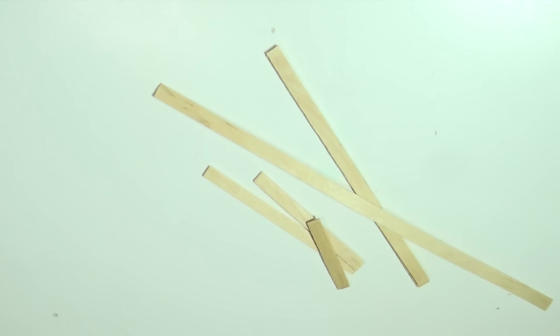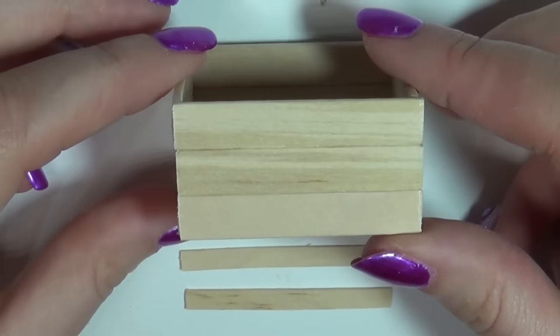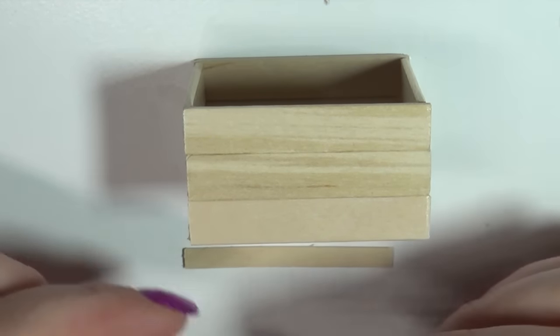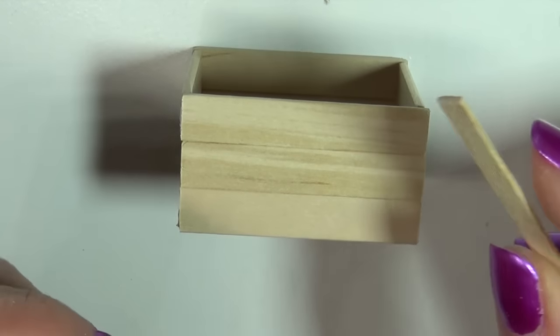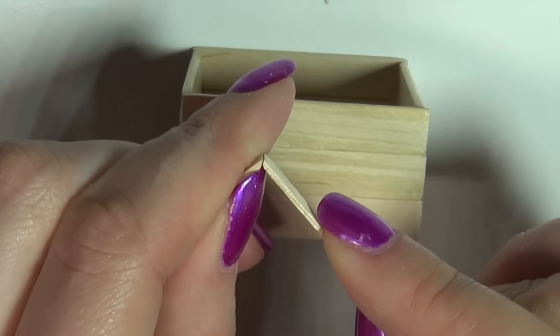To add some detail I'm using some thinner stirring sticks to glue onto the outside of the bottom of the chest. I filed all the ends of each stick at an angle so they would fit nicely together at the corners.